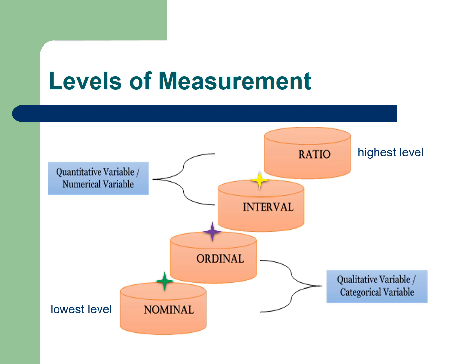Interval is a quantitative or numerical variable. The number zero in interval scale is arbitrary. The common example is the temperature. The zero degree Celsius temperature doesn't imply an absence of temperature. Rather, it has a meaning, that is, zero degree Celsius is a freezing point.